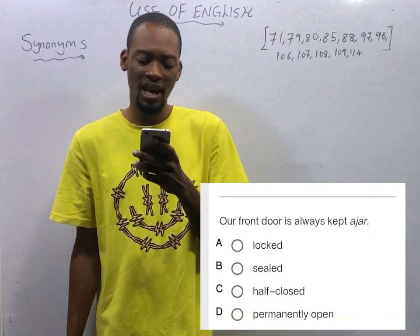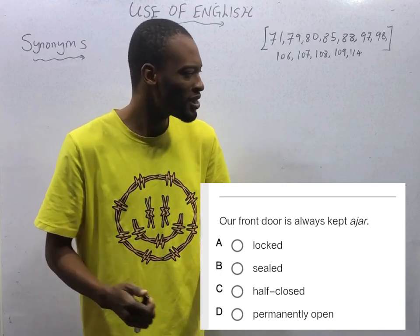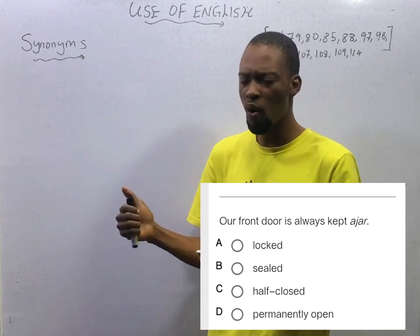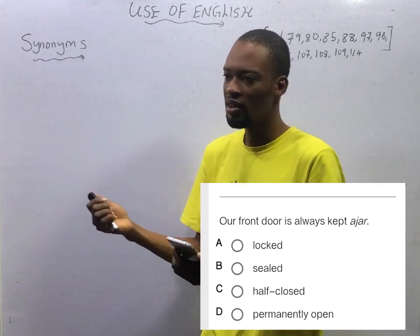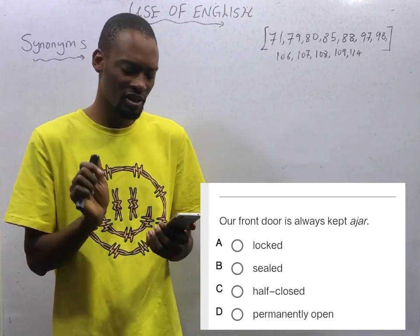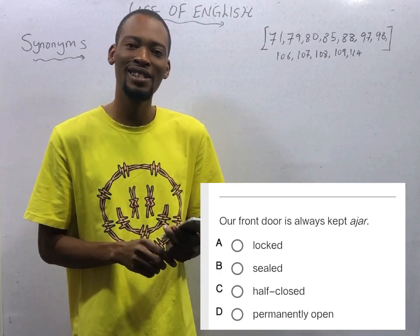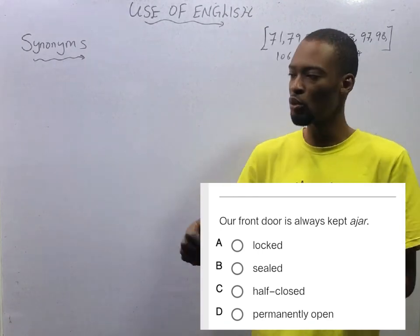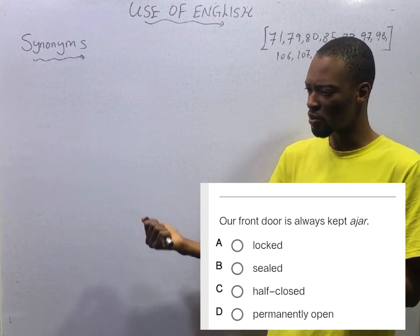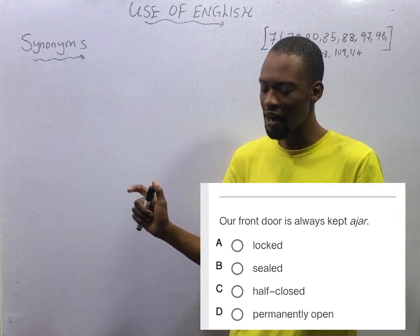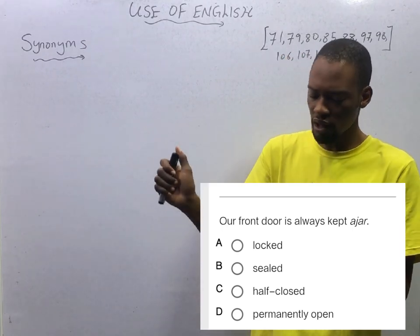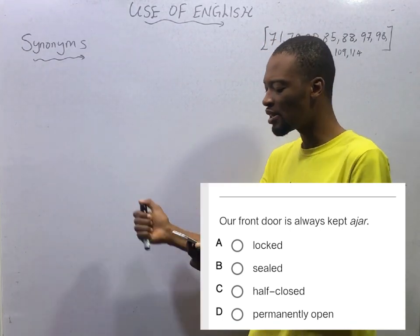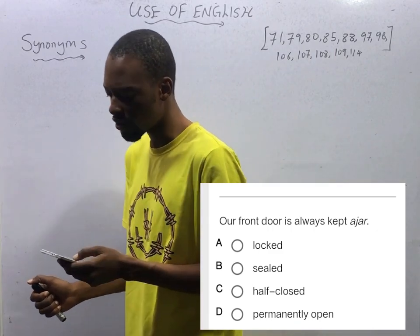'Our front door is always kept ajar.' Options: locked, sealed, half-closed, permanently open. For a door to be kept ajar simply means for the door to be slightly open. If a door is slightly open, it means it is half-closed — not permanently open, not locked or sealed. It is slightly open, not completely open and not completely closed. Making option C the correct option.